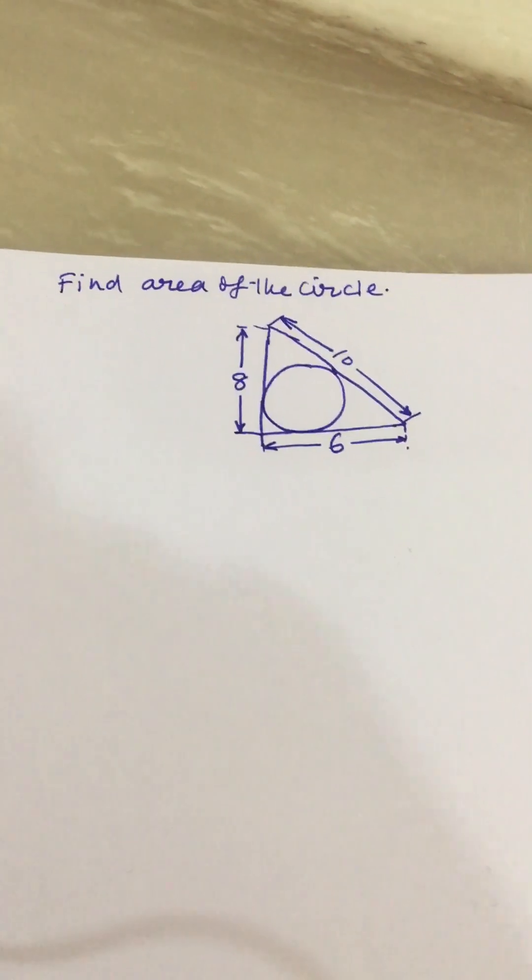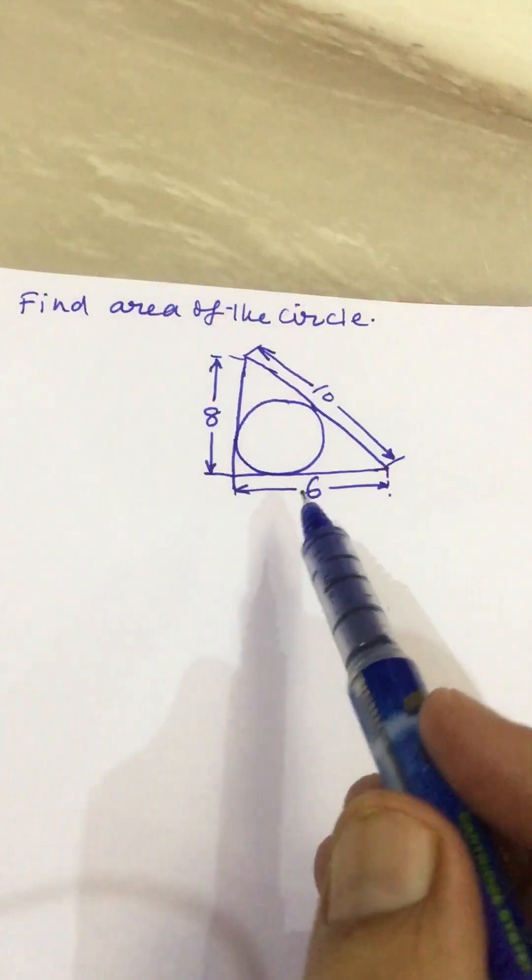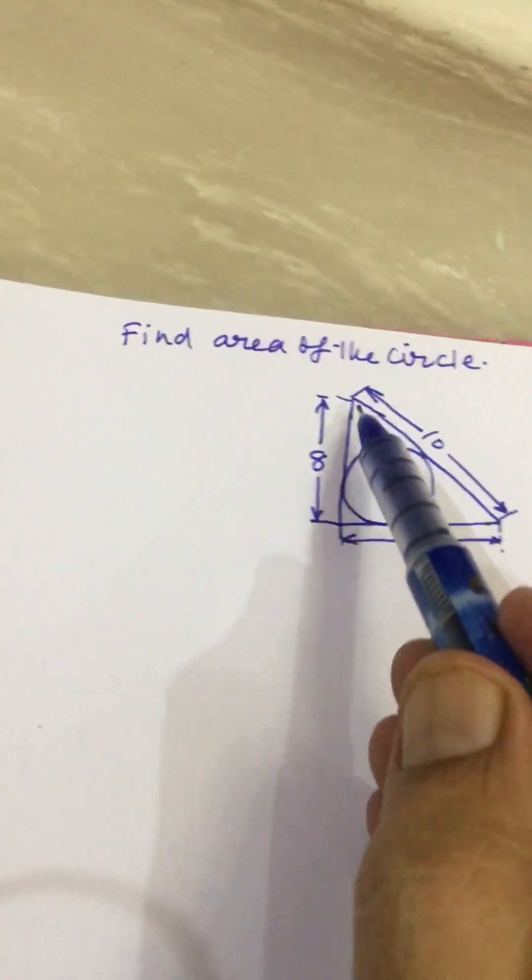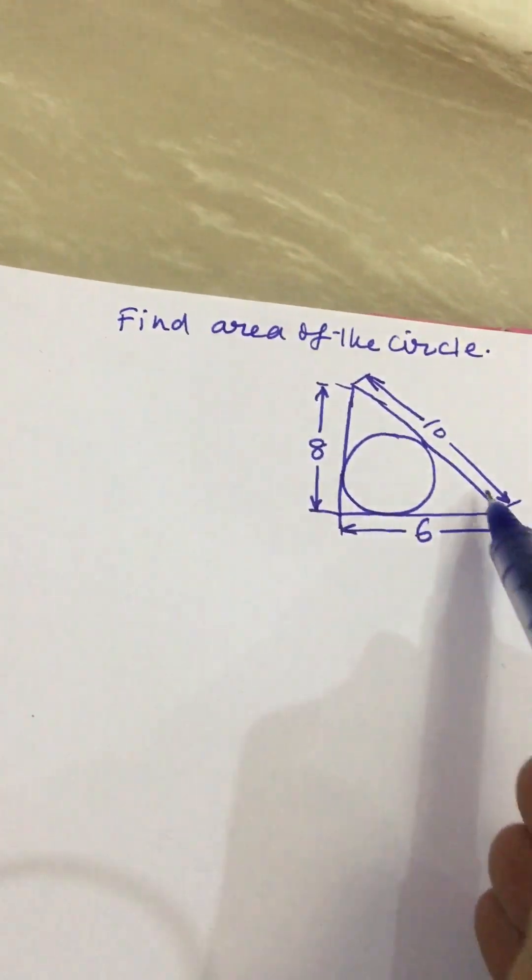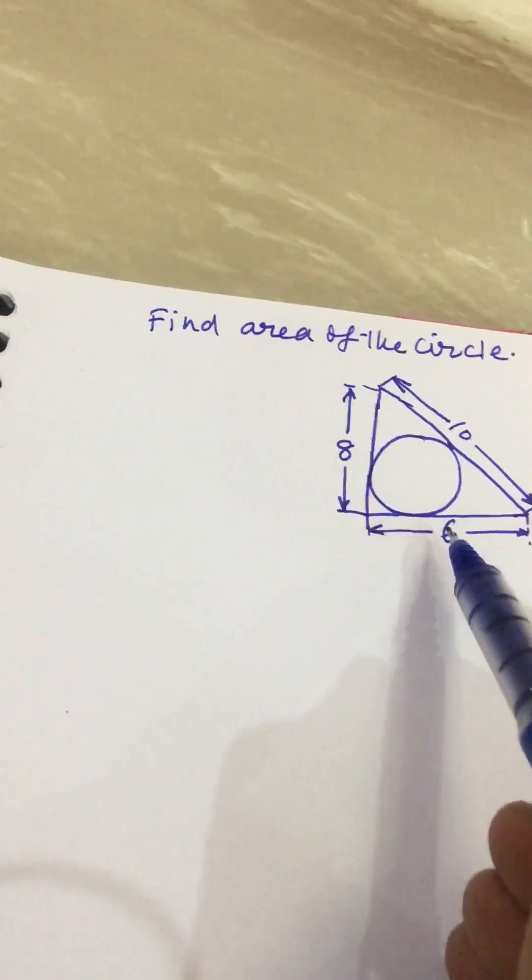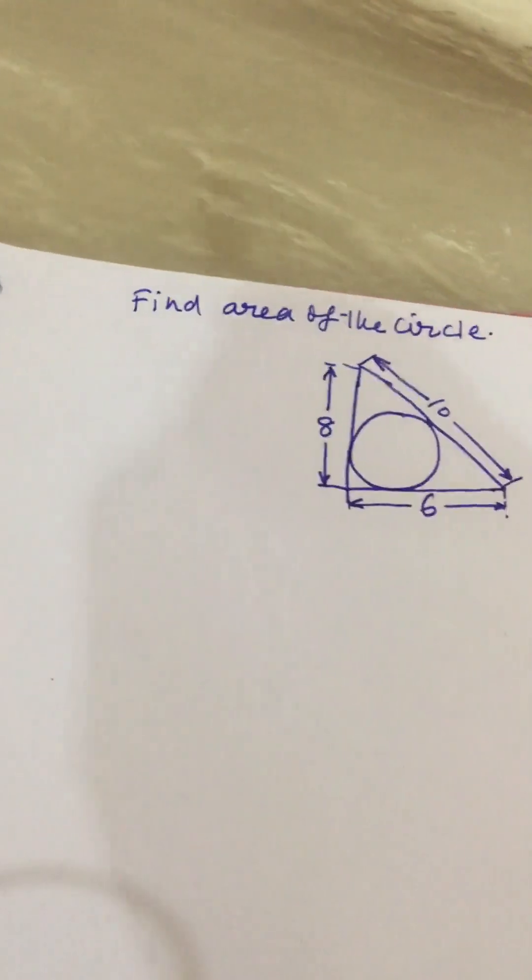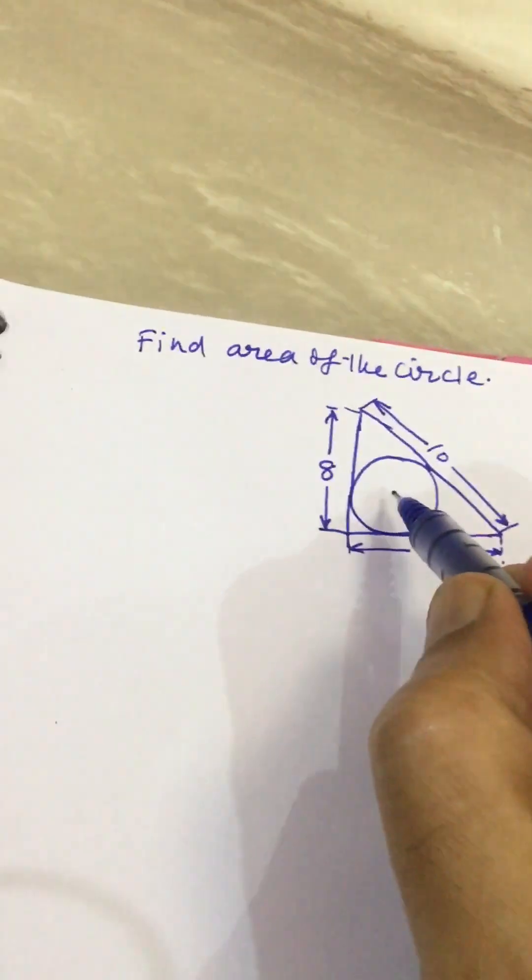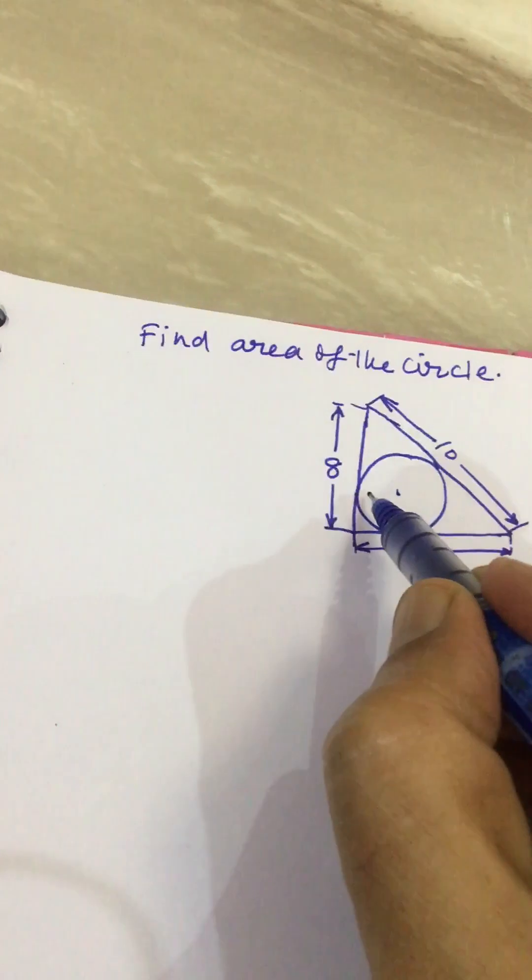In this video we will find the area of this circle. This is a triangle. This side is 6, this side is 10, this side is 8. We have to find out the area of this circle.